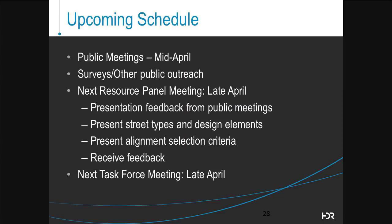In terms of next steps and upcoming schedule, initial rounds of public input were slated for early April, with four meeting locations identified from April 7th through April 13th, plus the ability to provide input through the MTP website and MindMixer. Late April will include follow-up meetings with the resource panel to review information received from the public input process, review initial street types and associated design elements, and present alignment selection criteria related to the evaluation of MTP alignments. That information will then be presented to the task force to monitor the MTP update and associated input from the public and resource panel.